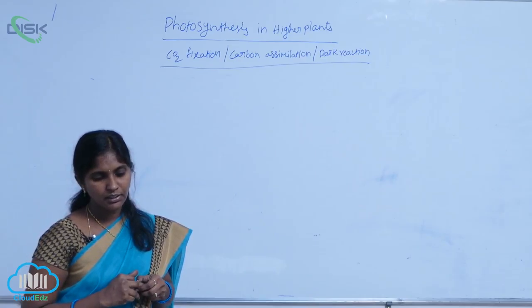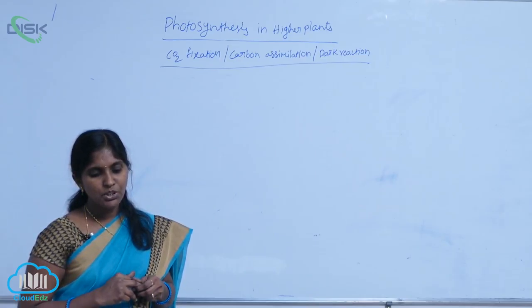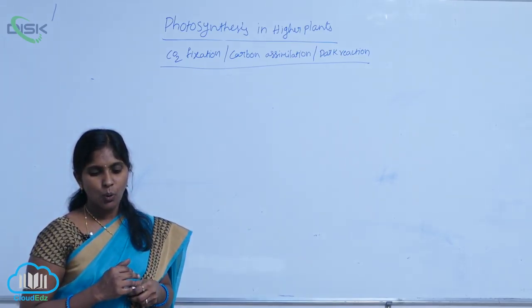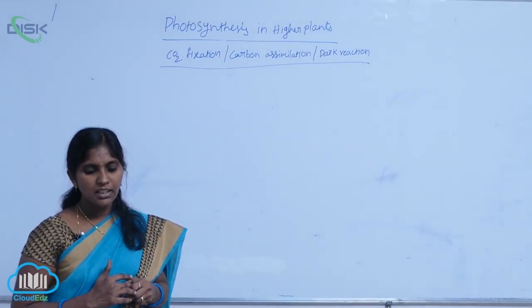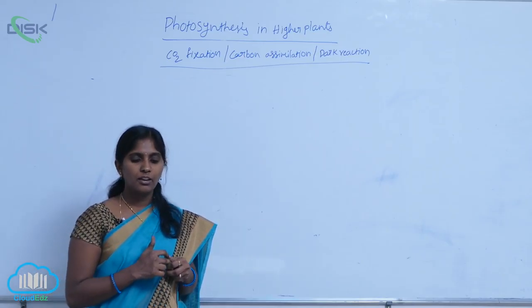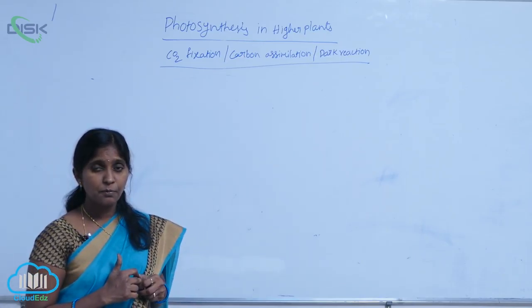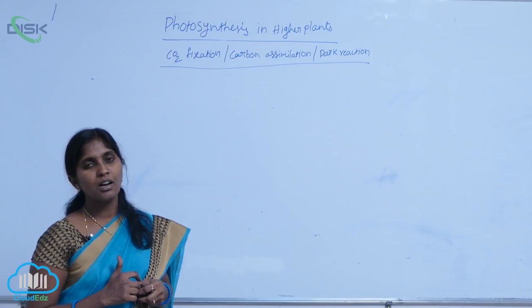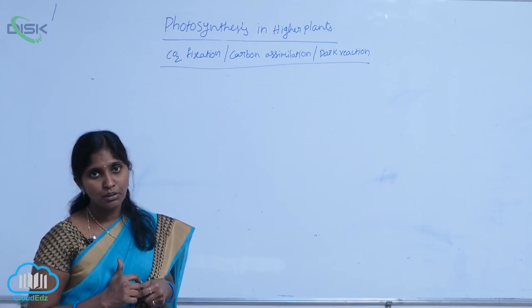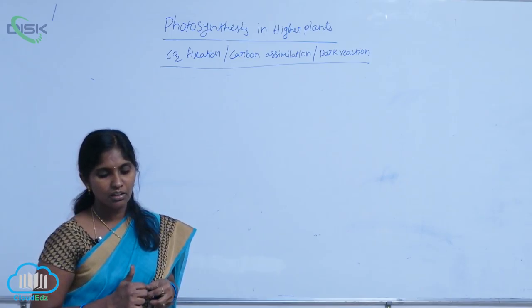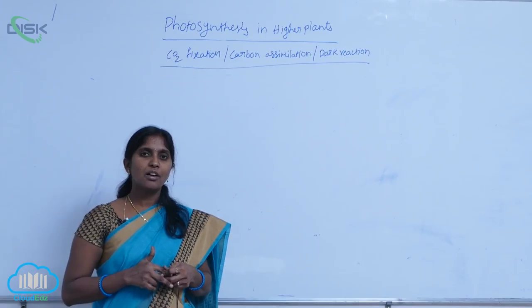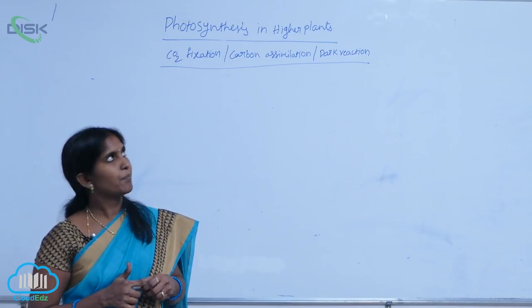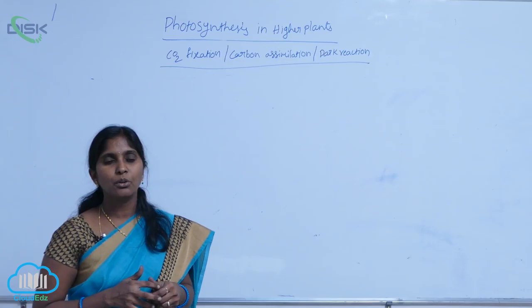According to this, carbon assimilation during photosynthesis is classified into two main types. One is the C3 cycle or Calvin cycle, where PGA is the first compound, and the other is the C4 cycle or C4 pathway, where OAA is the stable compound. These two pathways occur in plants to fix carbon dioxide into carbohydrates.